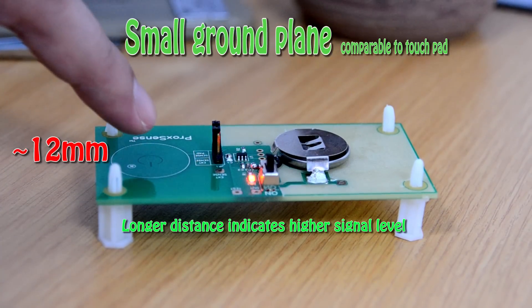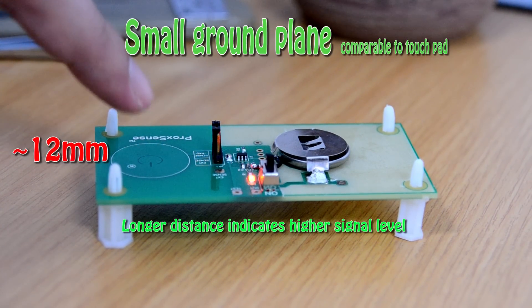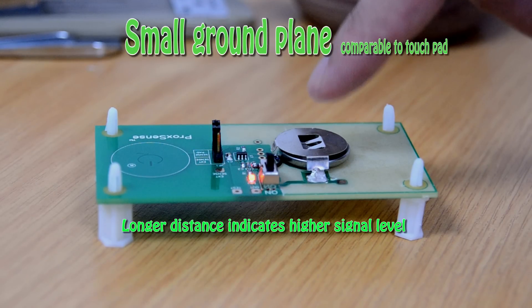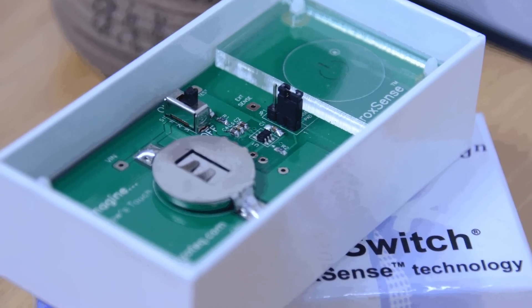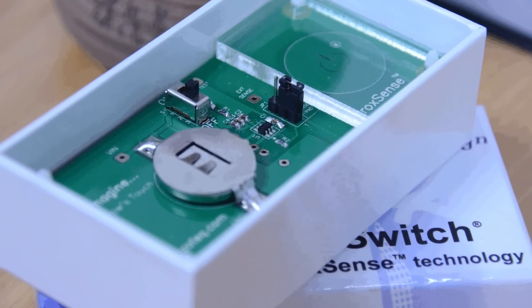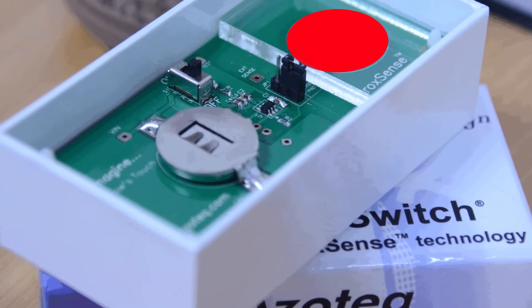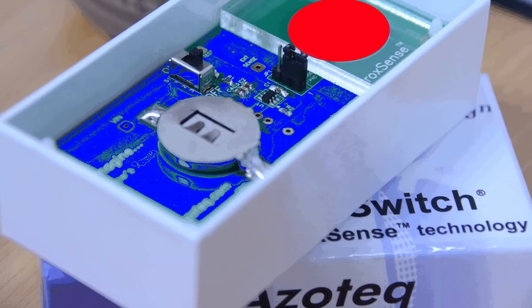With similar signal levels, the sensor IC cannot differentiate the touch on the touchpad from the touch on the ground plane. As the objective is to make the touchpad the only sensing port, methods to sensitize the touchpad and to desensitize the ground plane is very much needed.